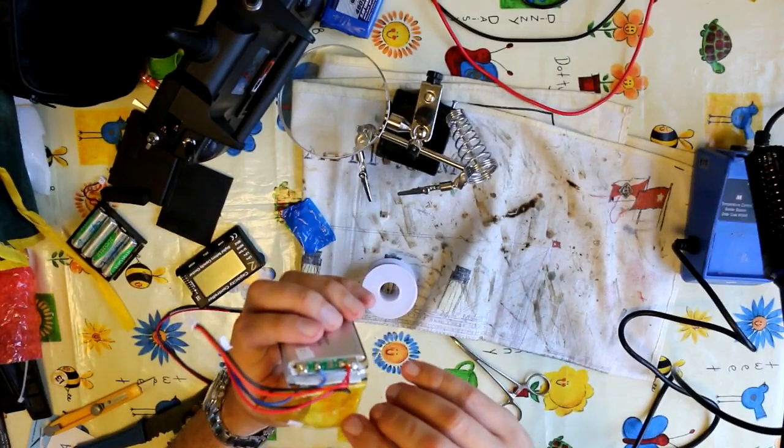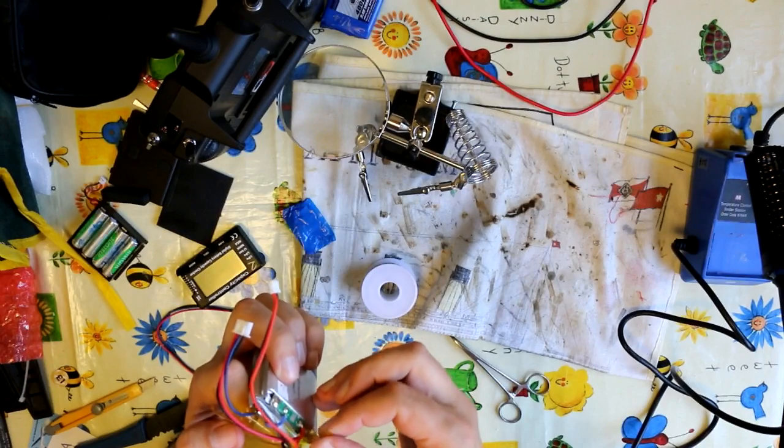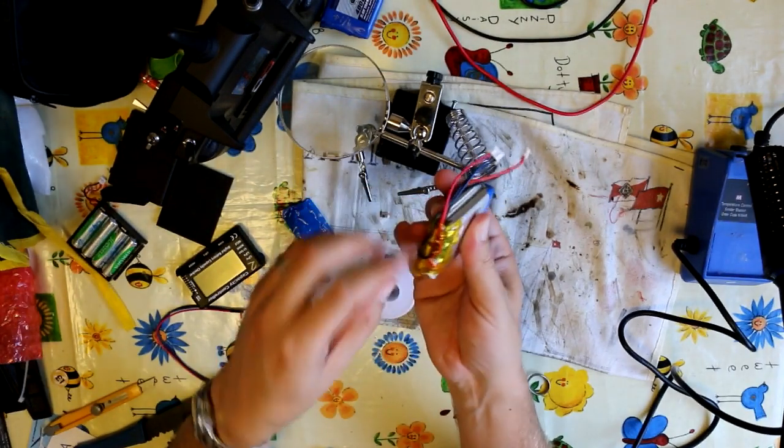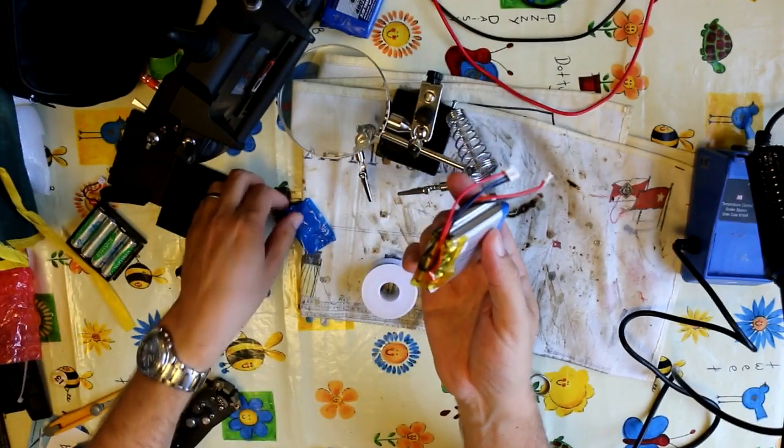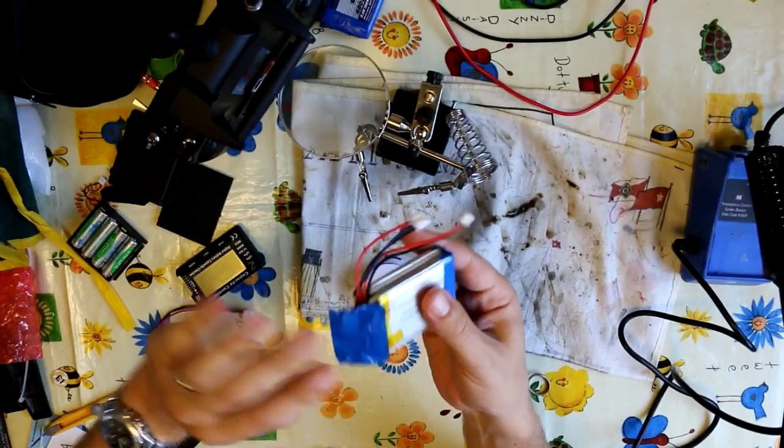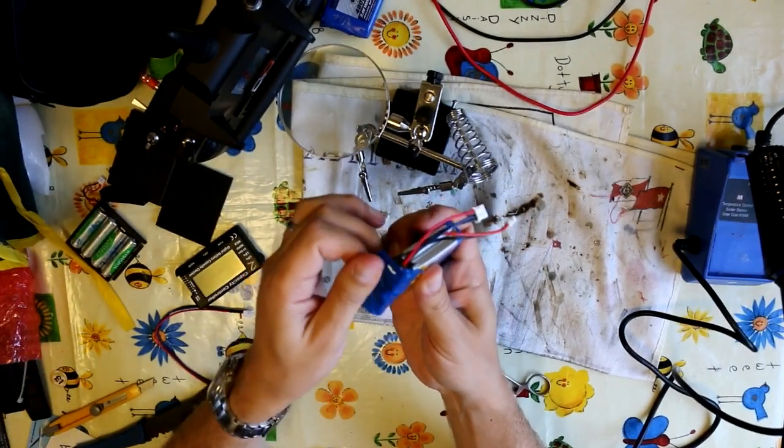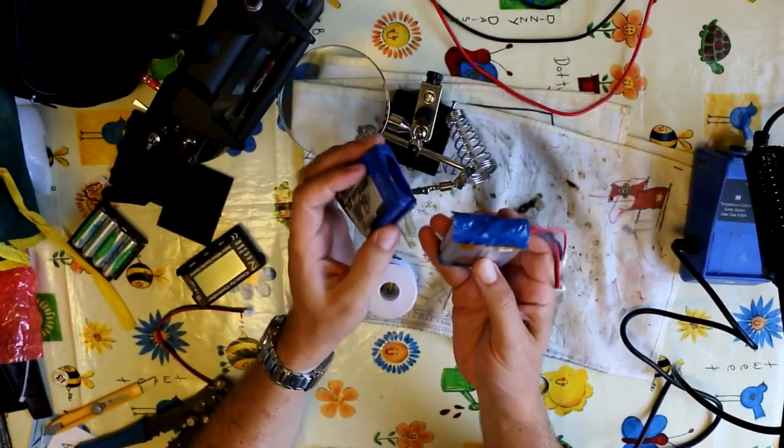Then I just pop the tape back over to carefully cover up the contacts exactly as it was before and make sure that it's covering up all those contacts so there's nothing exposed, so there's no risk of anything shorting out. I'll take the blue tape which is just cosmetic and just wrap that over.